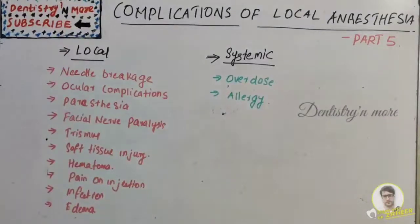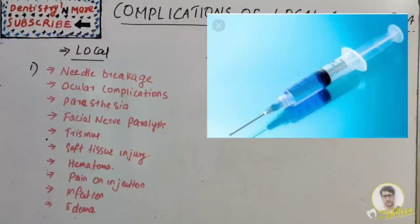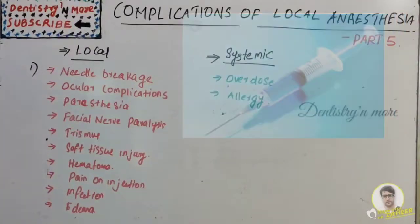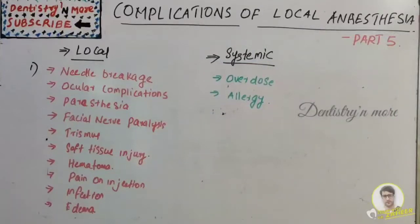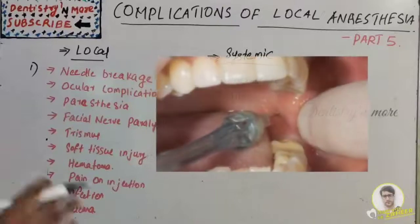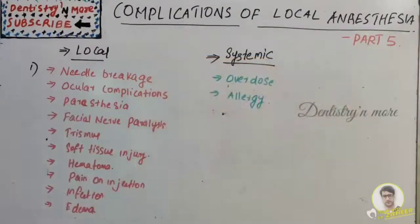Starting with local complications, the first one is needle breakage. This is quite rare because of using disposable needles, but if it happens it is mainly due to bending of needles. It could also be due to sudden unexpected movement of the patient, inserting the entire length of the needle into soft tissue, or use of smaller needles such as 40 gauge needles.